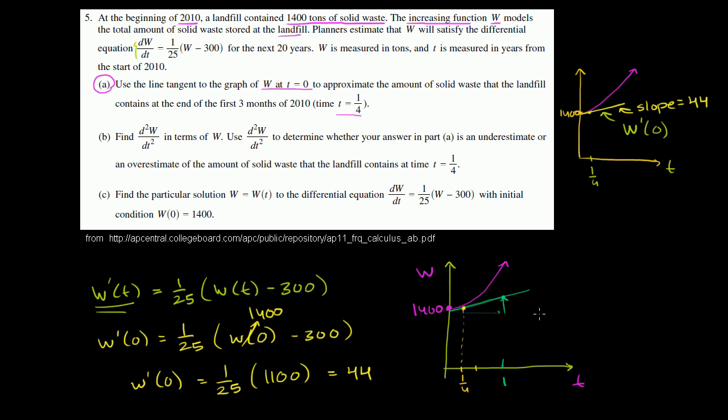And we could write down the equation of this line if we like. We could say this line, this line, so we'll call this the w approximation because this isn't exactly our w function. This equals the slope of our line, 44 times time, plus our w-intercept or plus our initial condition, plus 1,400.